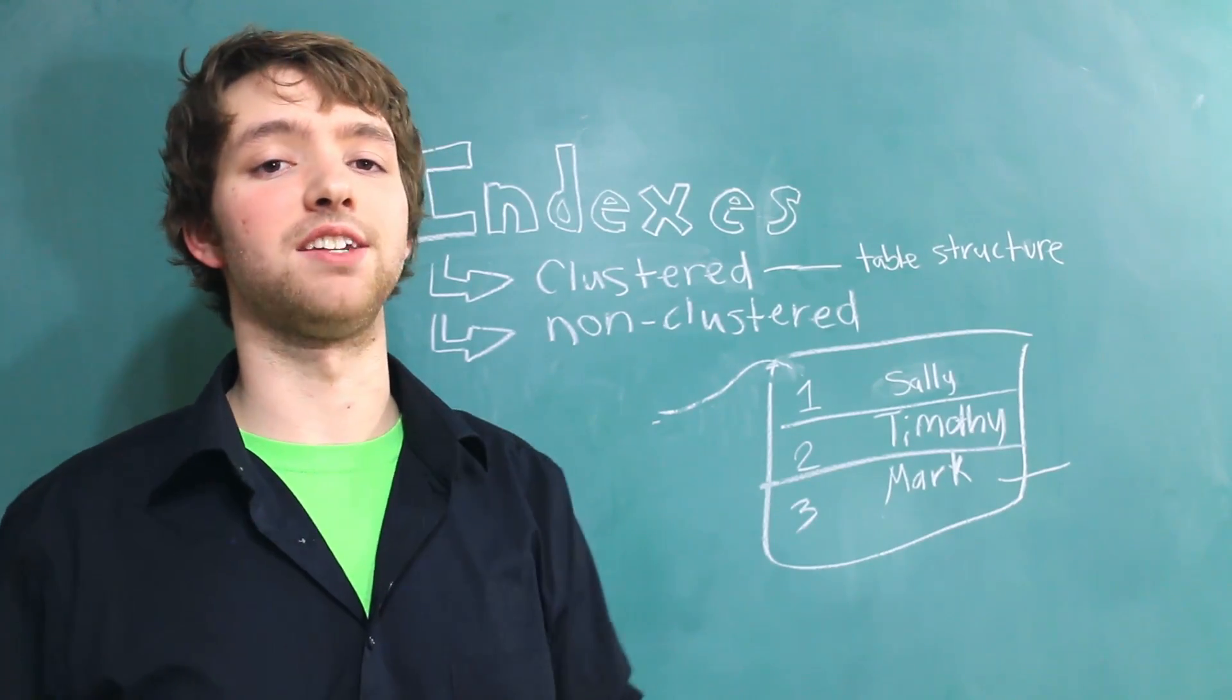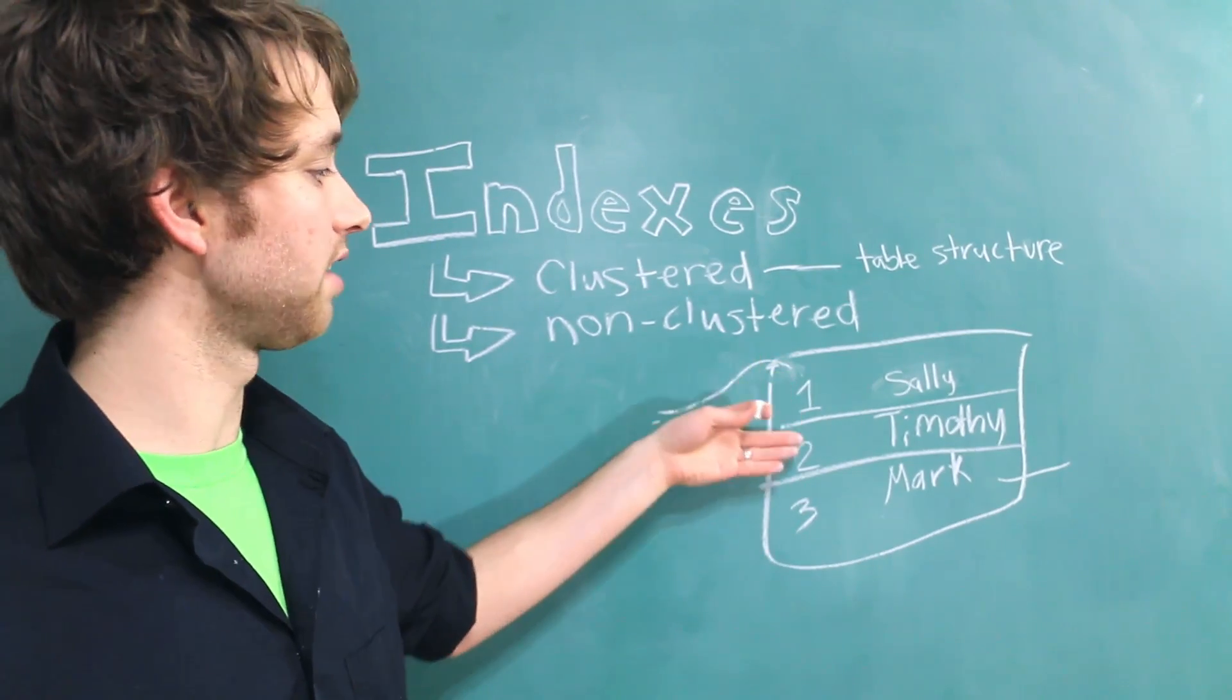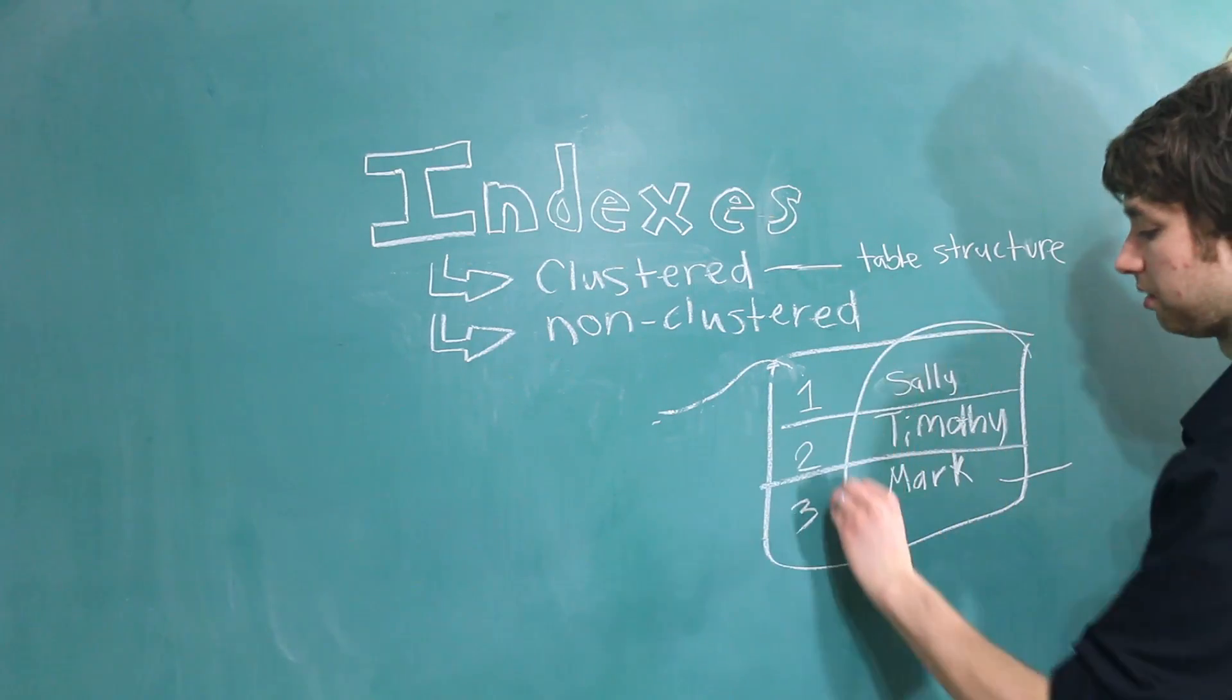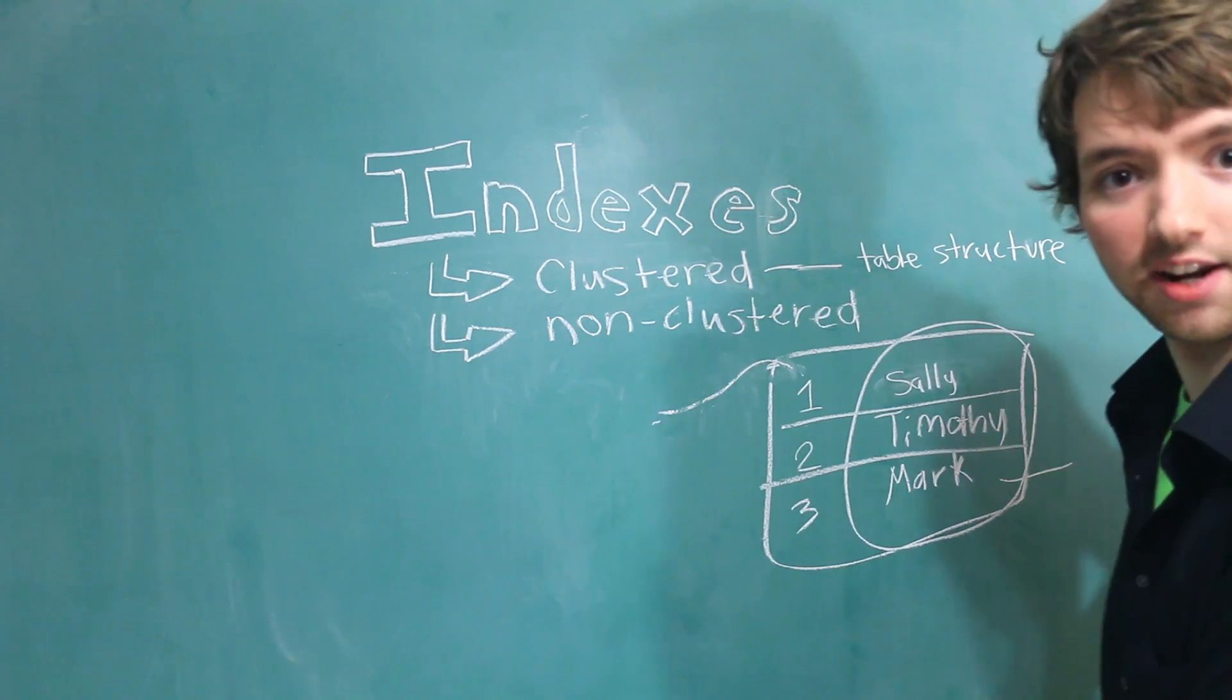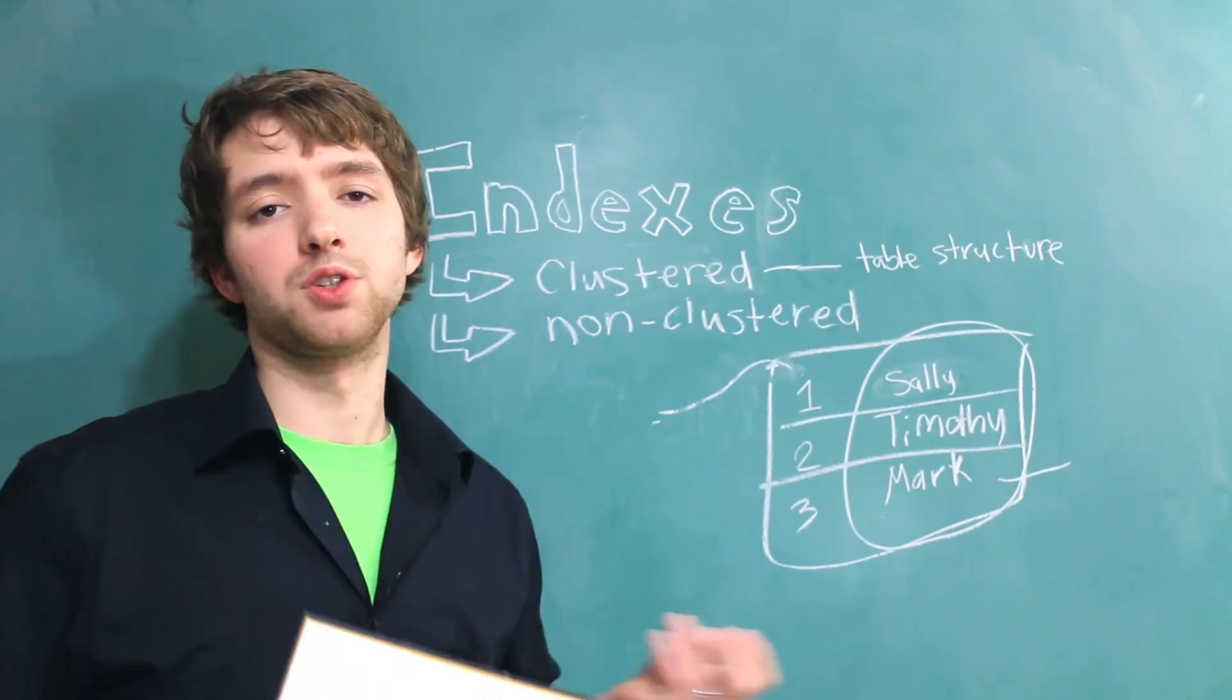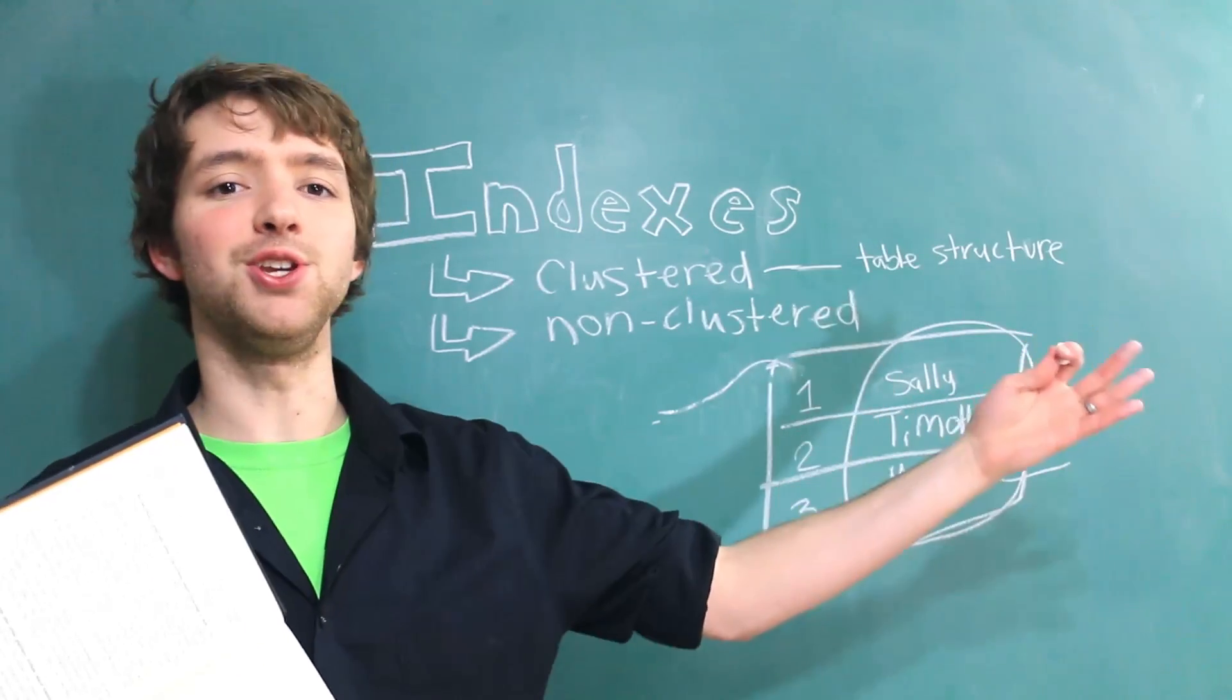Now moving on to a non-clustered index. It works very similar in that it organizes the data like this, but the actual data that's associated with it is stored somewhere else. So it kind of just tells you how to find the data. The best illustration for that is using an index in the back of a book. So let's say I look up something like Joins in a database development book. It'll say joins page 4082. It points you to where the data that you're looking for really is.